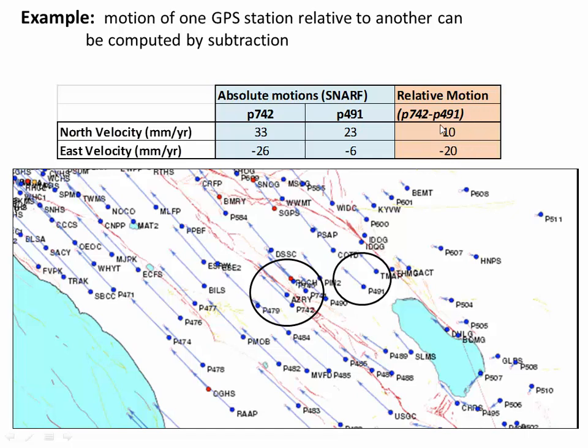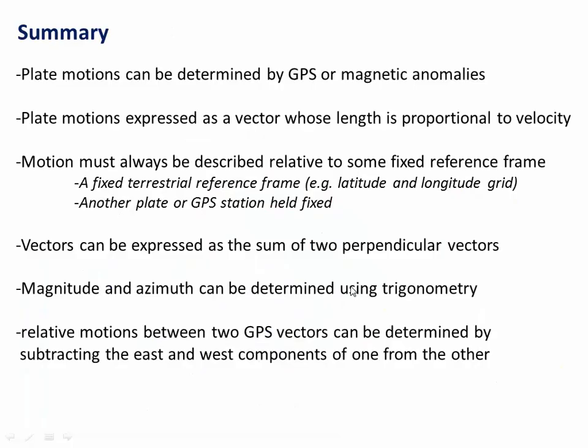So for the Northings, 33 minus 23 is 10, and -26 minus -6 is -20. So this is now the Northing and the Easting velocities of station 742 relative to station 491. And so if we convert that into a single vector, it looks like this. 742 actually isn't moving that quickly relative to 491. Only about a third of its total velocity is relative to 491.